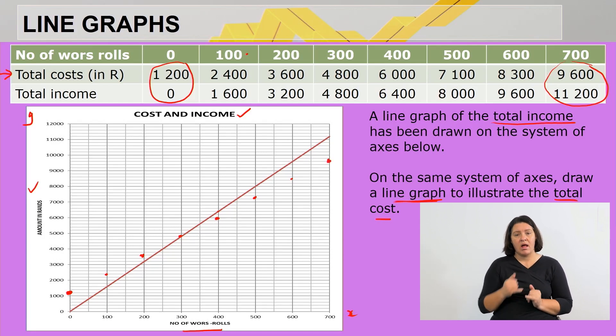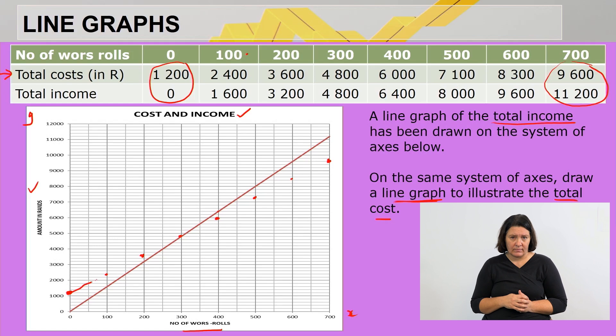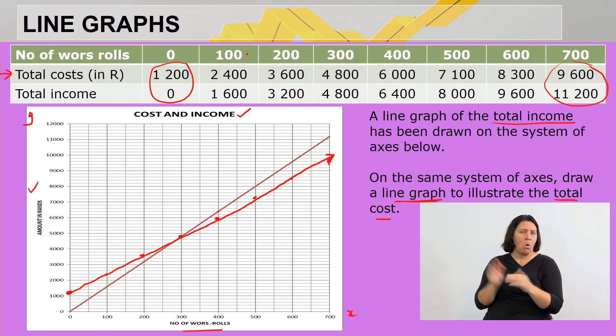Since this is a line graph, what do I do now? I want you to use your ruler doing this. We're gonna connect all of these dots. I'll indicate this with an arrow because it can happen that you will sell more than the 700 rolls. Clearly, this will be our cost graph and we label it appropriately.